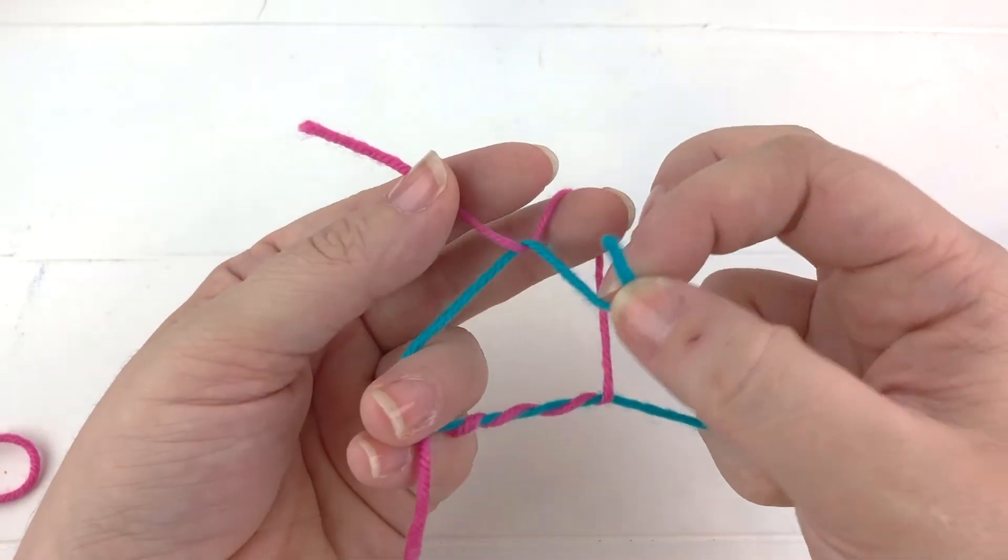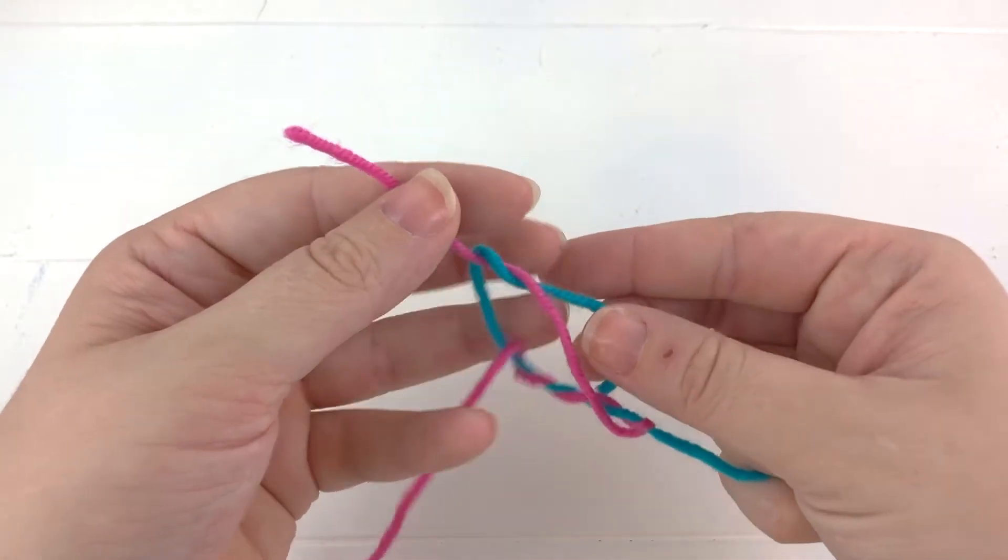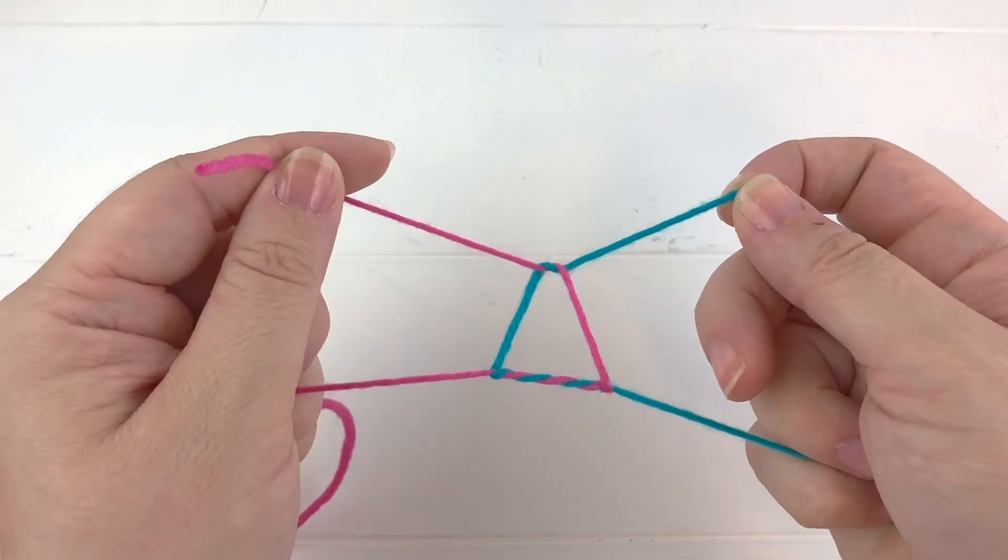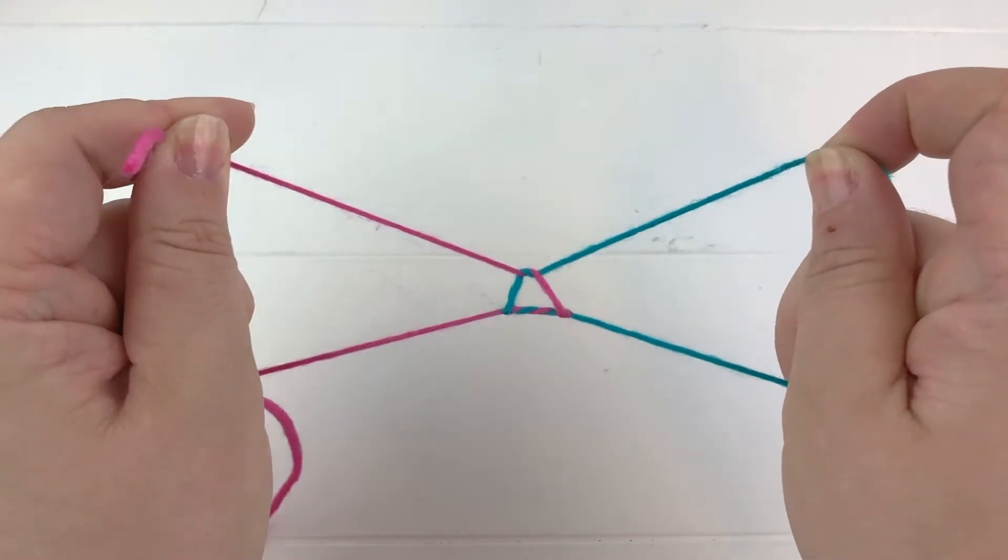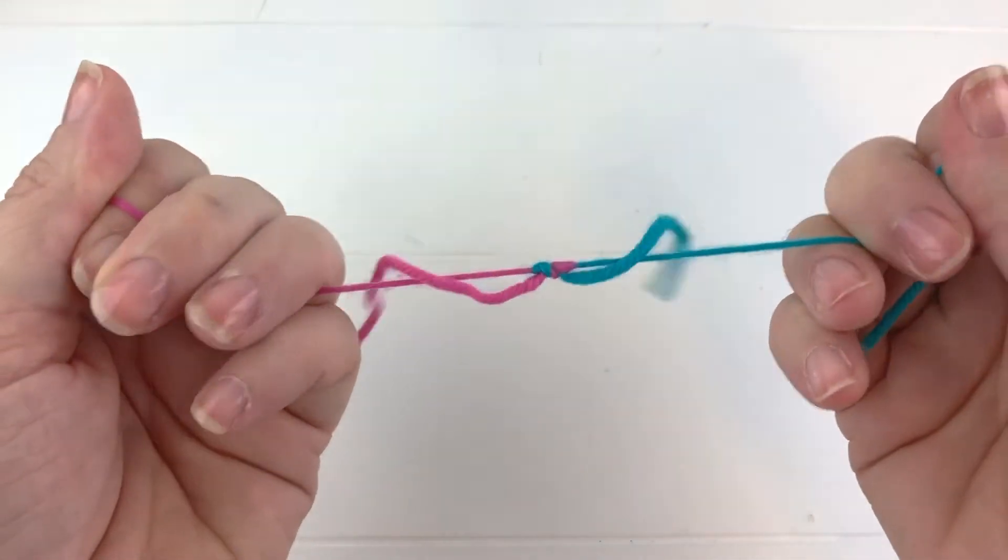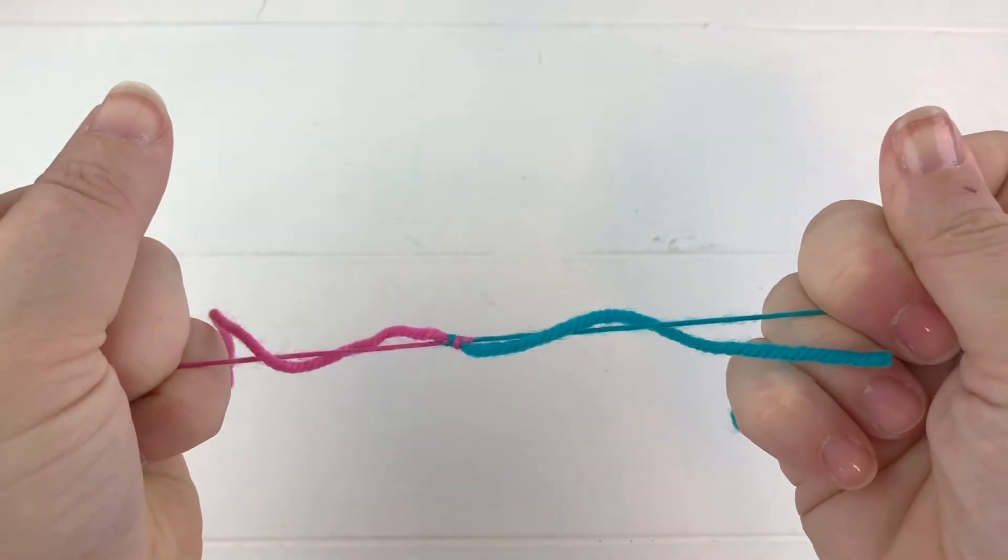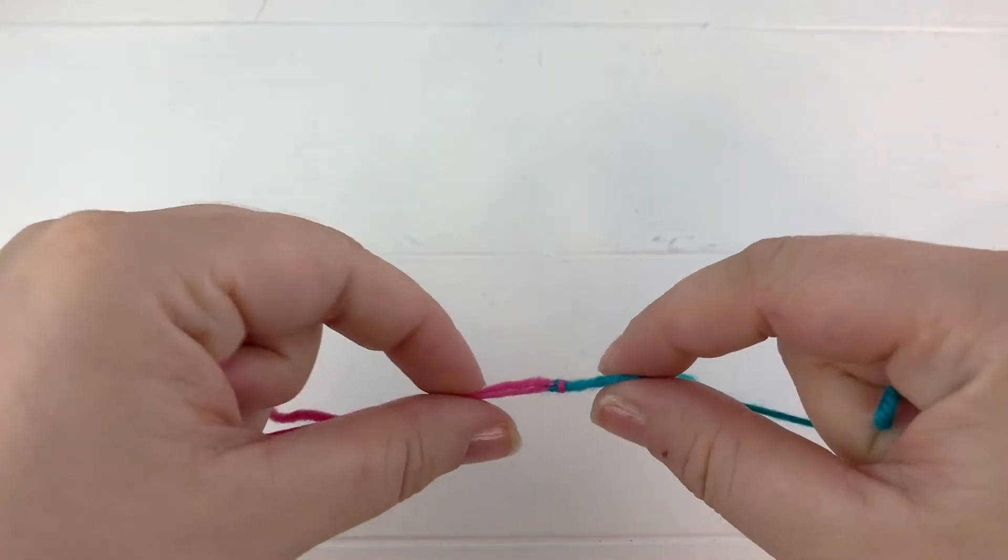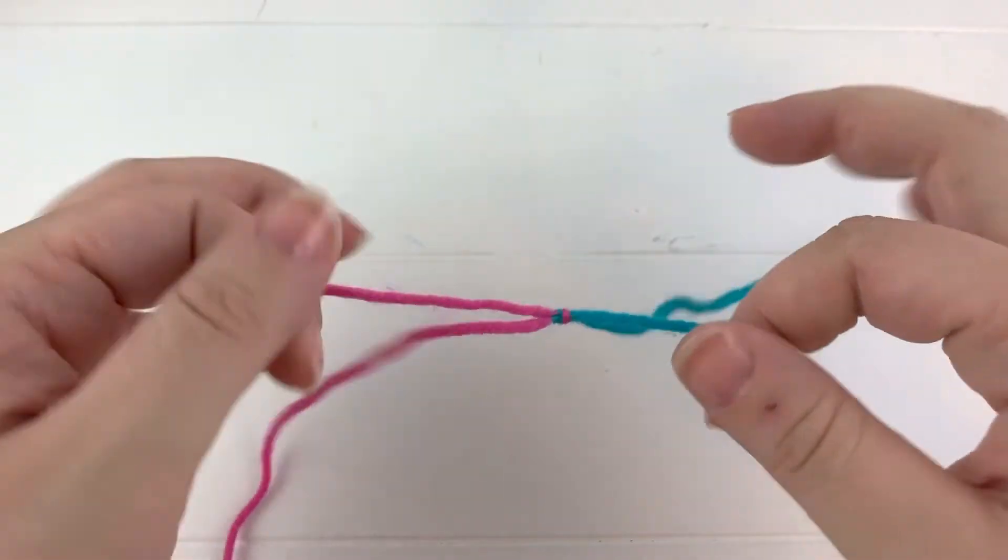Now pull everything tight. The really important part here is that you get everything tight. Start by pulling the long ends first as tight as you can, then pull your short ends as tight as you can.